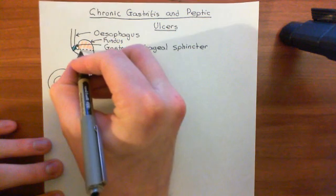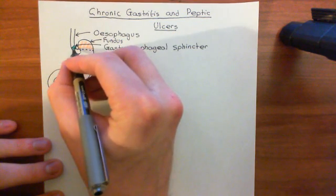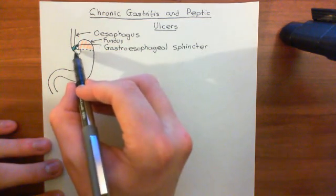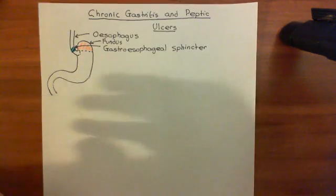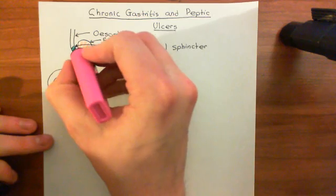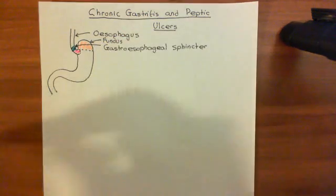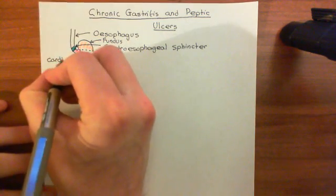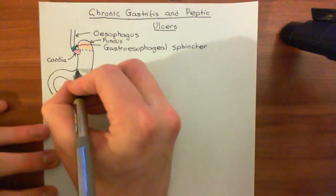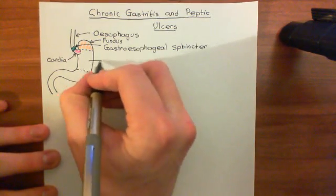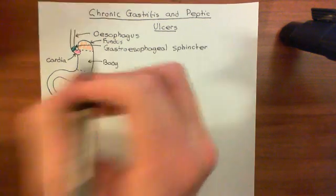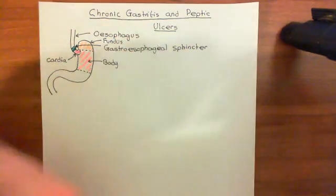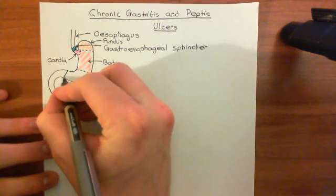The next important portion is this little section just after the gastroesophageal sphincter — it looks as though it's still part of the esophagus, but it's actually part of the stomach. I'll highlight this in purple. This is known as the cardia or the gastric cardia. Then you have the main portion of the stomach, which is the body — I'll highlight this in red.